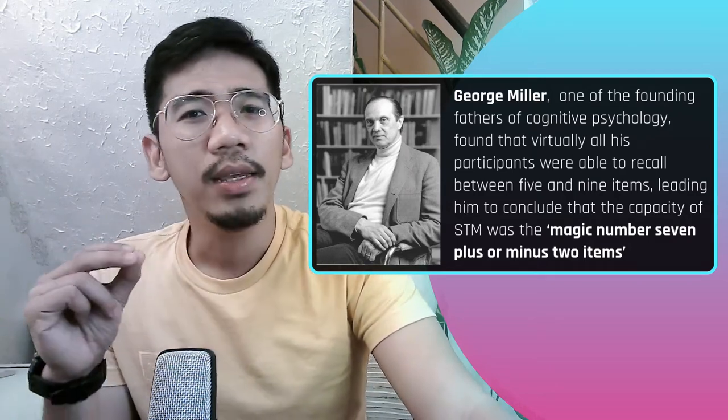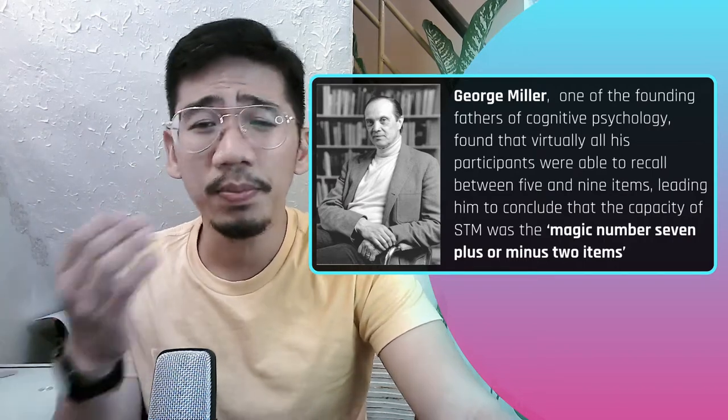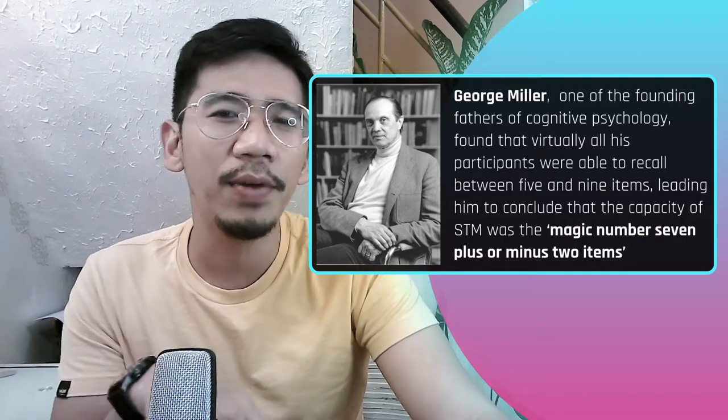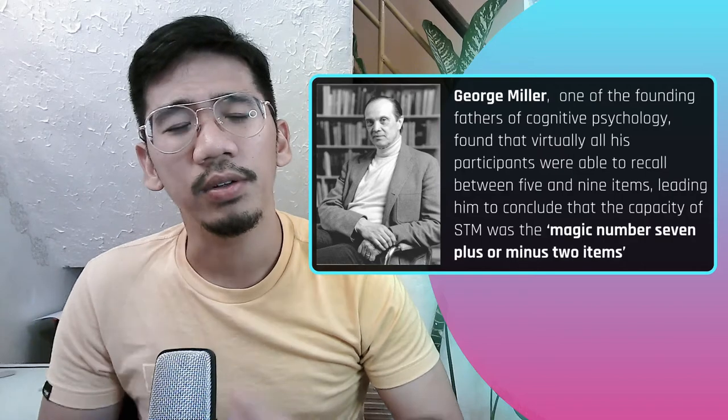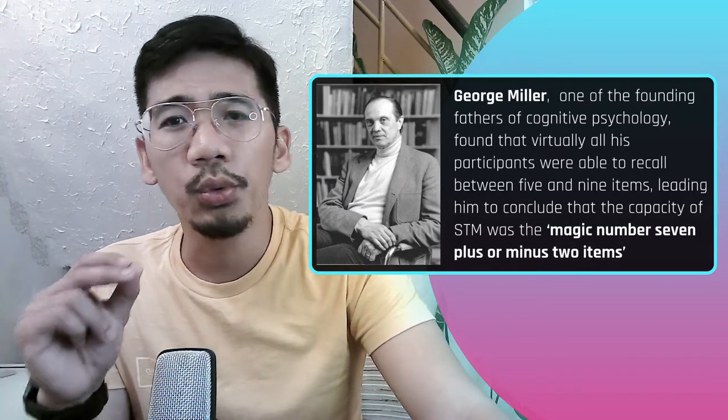Short-term memory is the active part of memory and has a limited capacity — you cannot store much information at one time. To answer how many things you can think about simultaneously, we turn to George Miller, one of the founding fathers of cognitive psychology. In 1956, he published one of the most influential research papers of all time. He presented word lists of different lengths to participants and asked them to recall the words immediately. He found that virtually all participants could recall between 5 and 9 items, leading him to conclude that the capacity of short-term memory was the magic number 7 plus or minus 2.